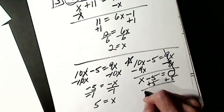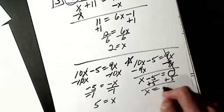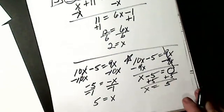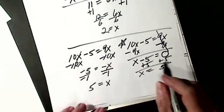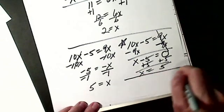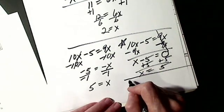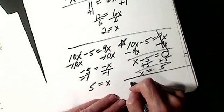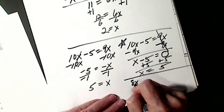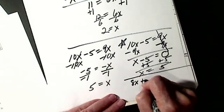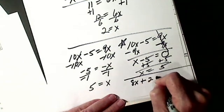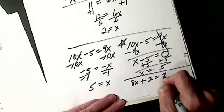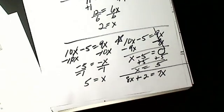Just try one more before we go. Let's make this 8X plus 2 equals 7X. Solve for X.